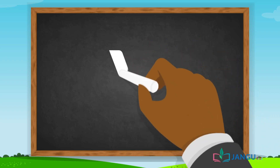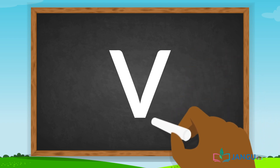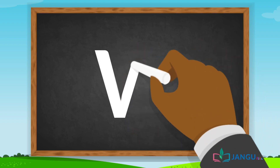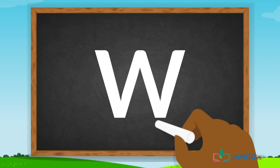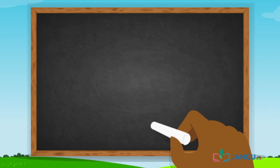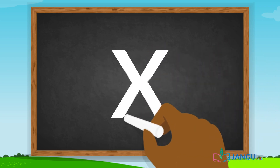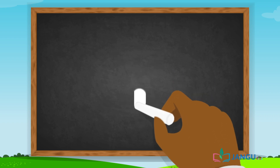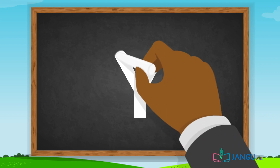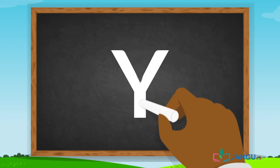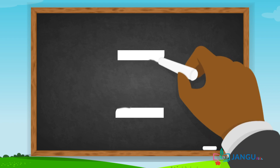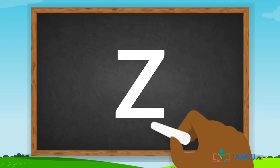V has two slanting lines joined at the bottom. W is an M upside down. X has two slanting lines that cross each other. Y has a long tail and two branches. Z has two short straight lines and a long slanting line that joins them.